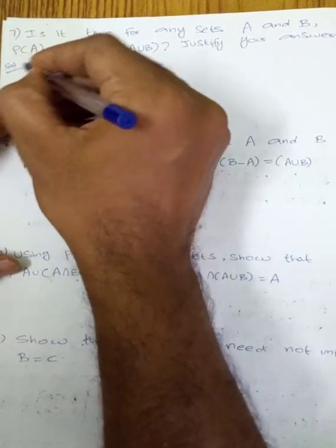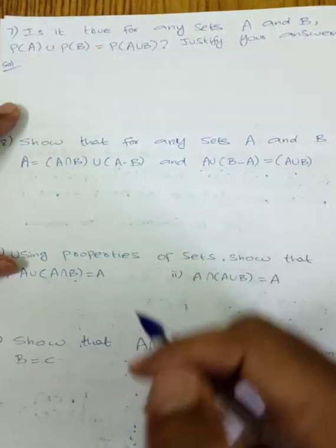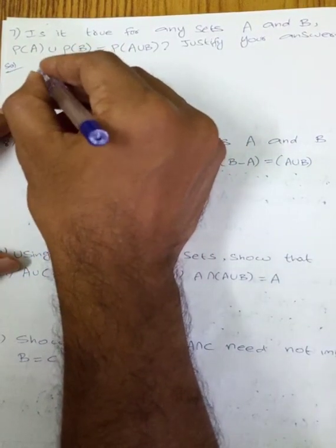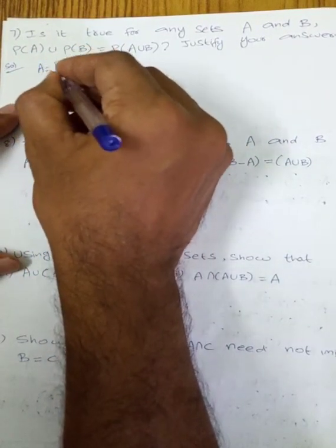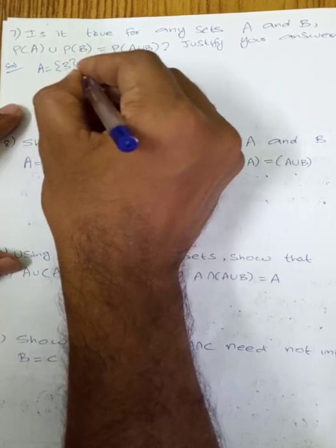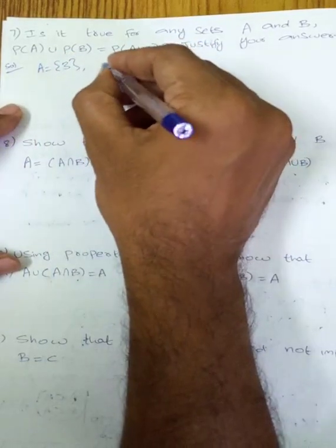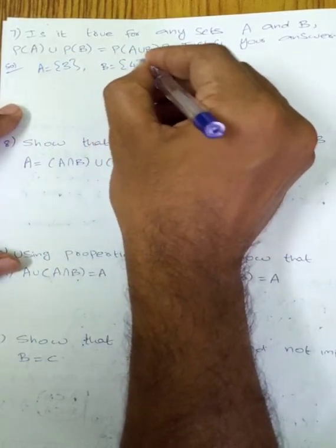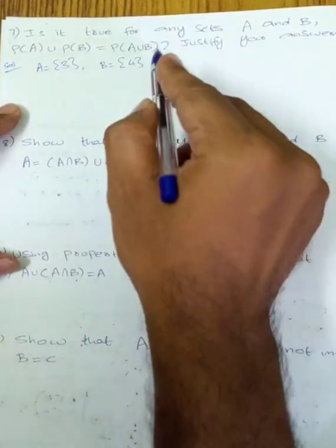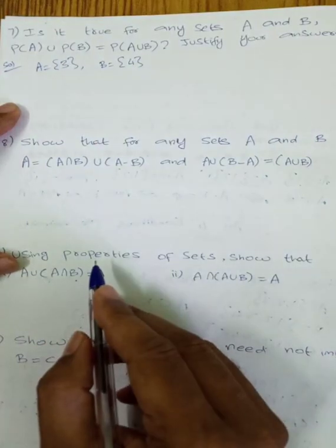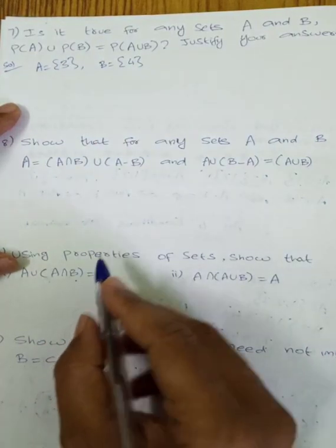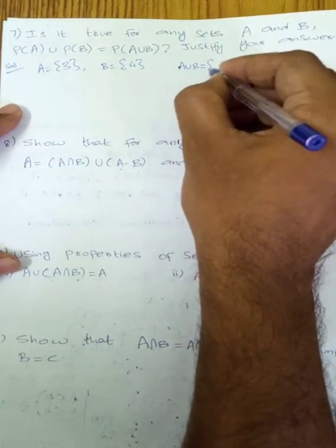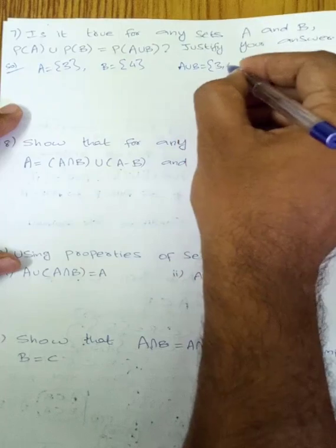Let's prove with an example. Let A equal to {3} and B equal to {4}. First, A union B equals {3, 4}.